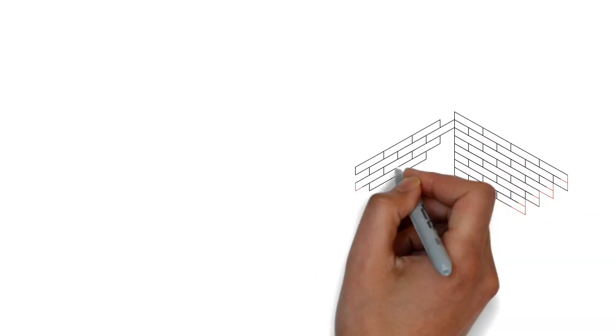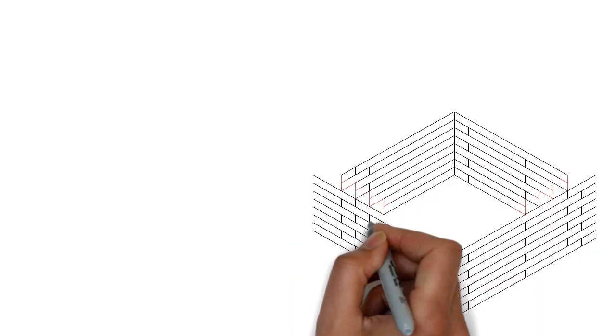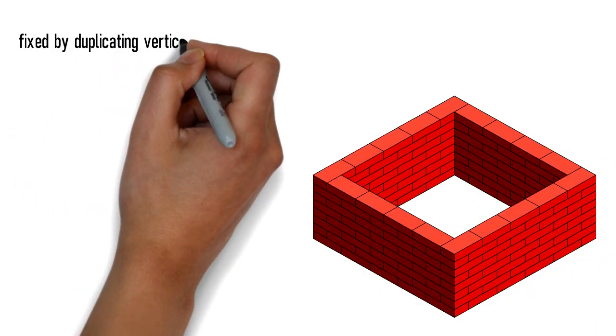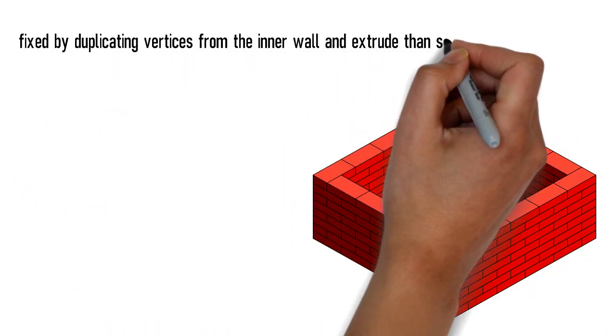After that, unhide the outer wall and do the same process. You can turn off the face orientation. It will look like I forgot to add a wall. Fix by duplicating vertices from the inner wall and extrude, then select the outer wall.